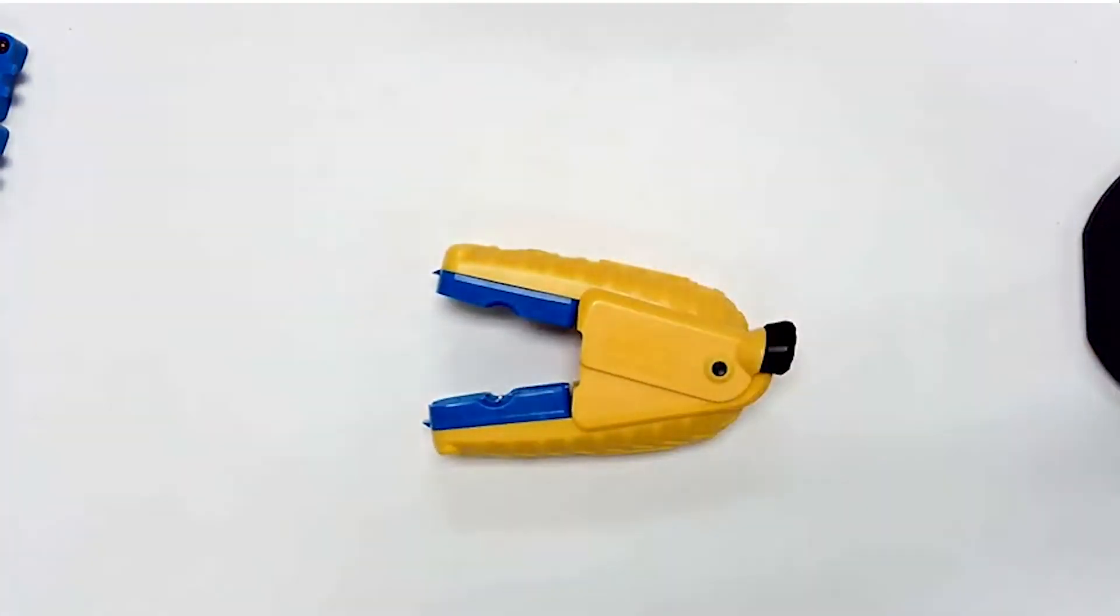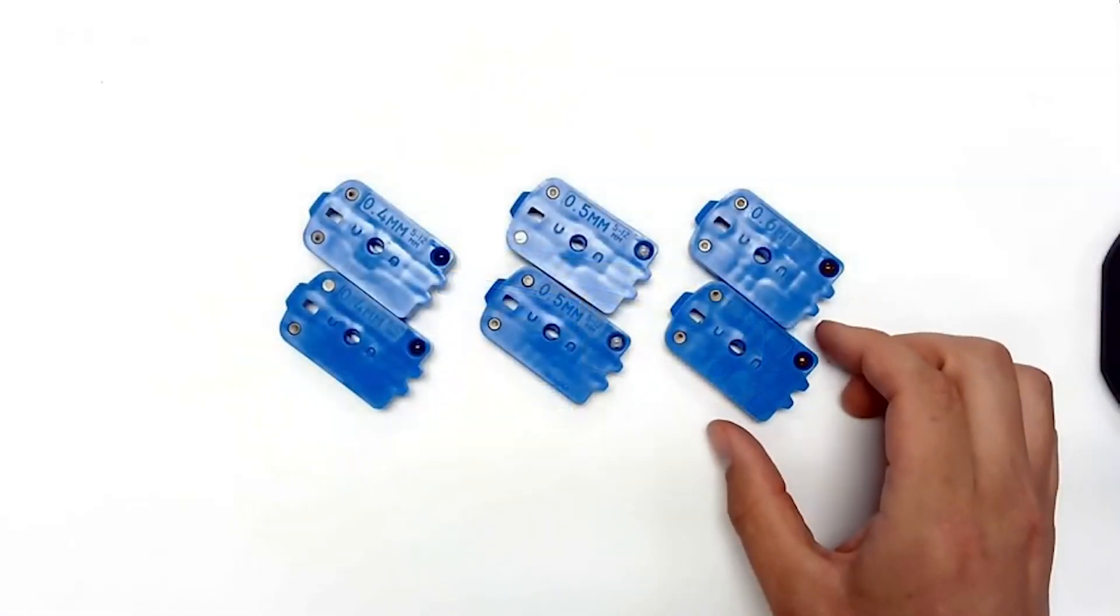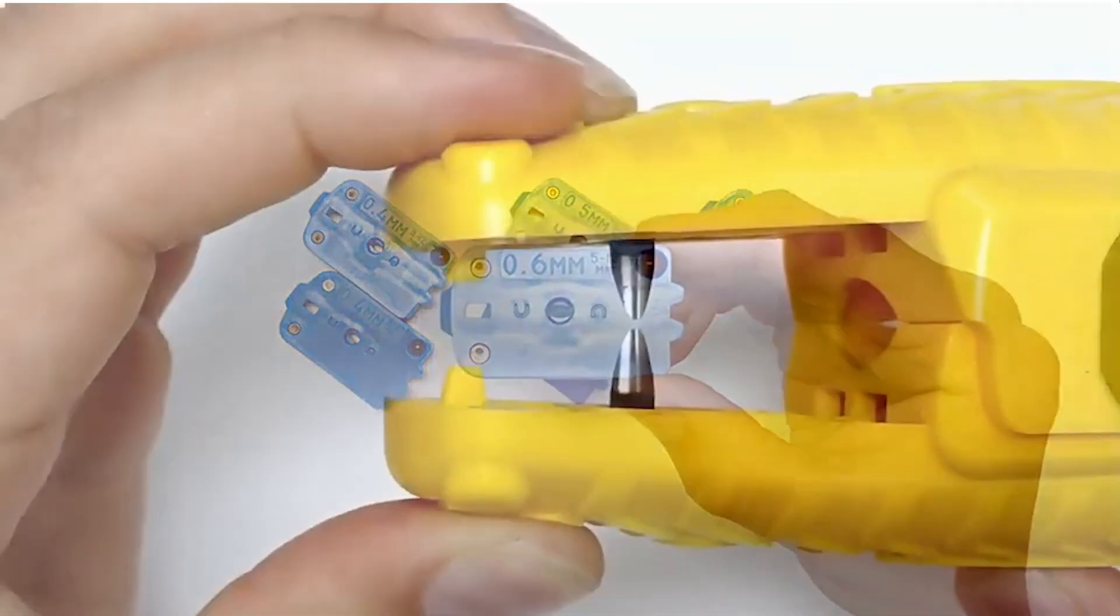The cable guides come in pairs and are completely symmetrical and interchangeable. They have identifying text and color codes for your application.